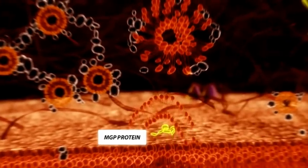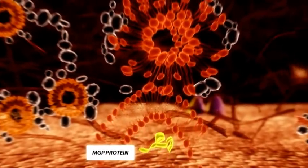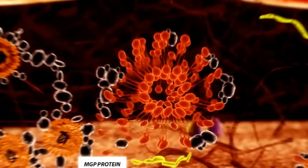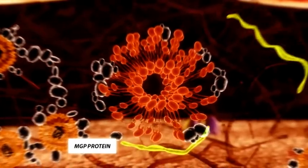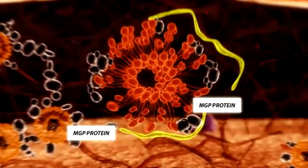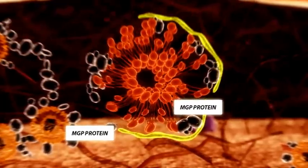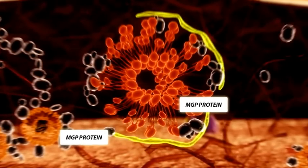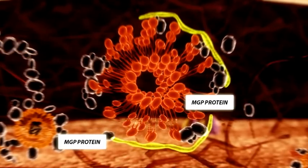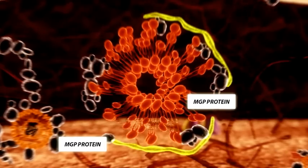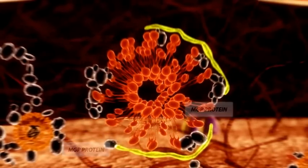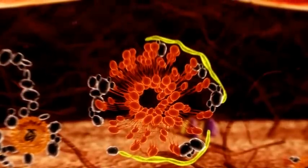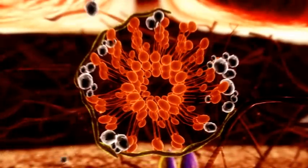The MGP activated by MenaQ7 will be secreted by the vascular smooth muscle cells and released into the extracellular matrix. Here it will find and bind the calcium crystal structures because it has a high affinity for these structures. When sufficient MenaQ7 is present, active MGP will be released in sufficiently active quantities. It will bind and cover these structures, leading to broad protection for further crystal growth.